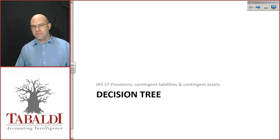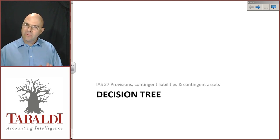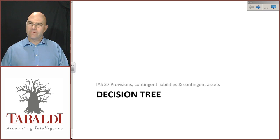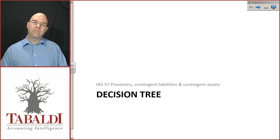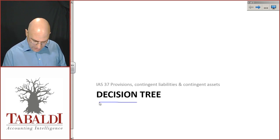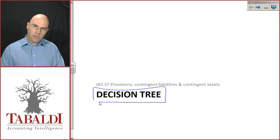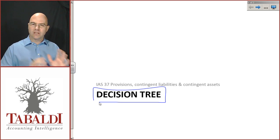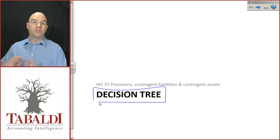Welcome back. We've covered two videos to give you a high-level overview of IAS 37 — the first was our standard on a page, and the second was a basic class example to get to grips with identifying liabilities that are provisions. Now I'm going to work through a decision tree to help you get a logical thought process in order to identify whether something is a provision, a contingent liability, or whether you should not even recognize or disclose it.